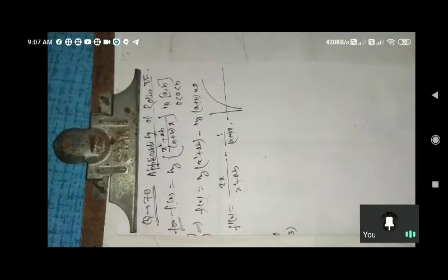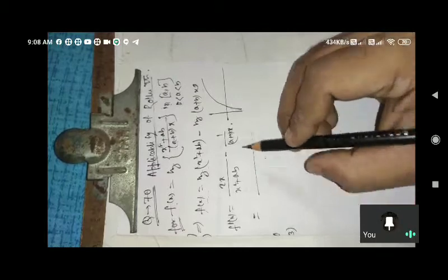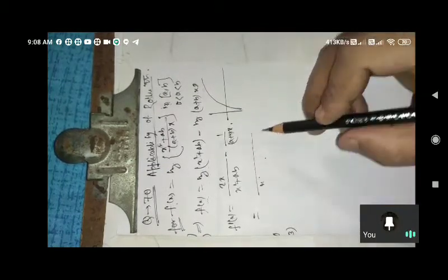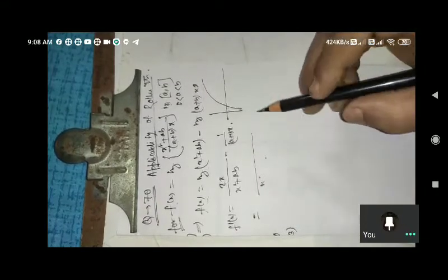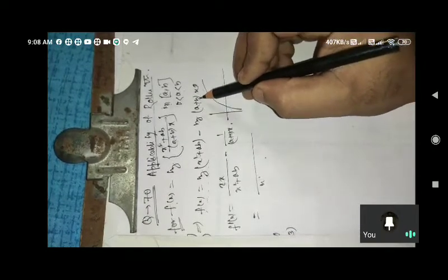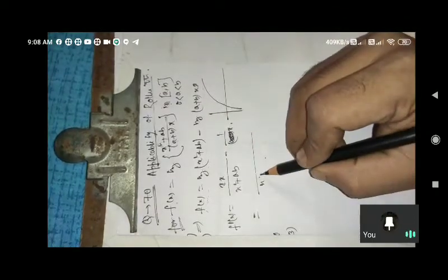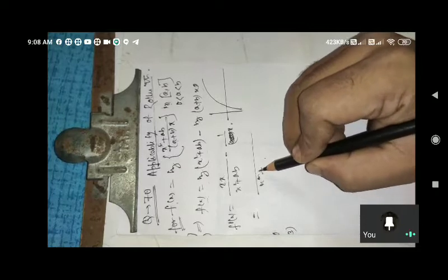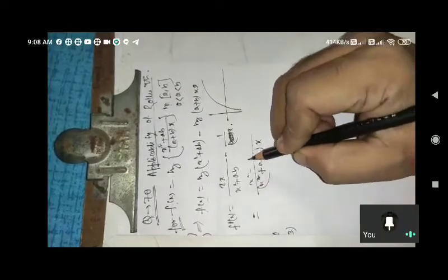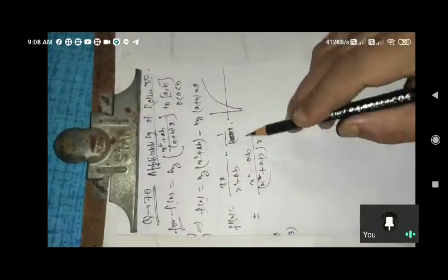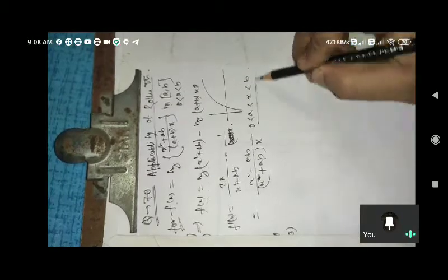And this equals 2x by (x squared plus ab) minus 1 by x. This is (x squared plus ab) into x equals x squared minus ab. It equals ab. It equals x. It equals 0.